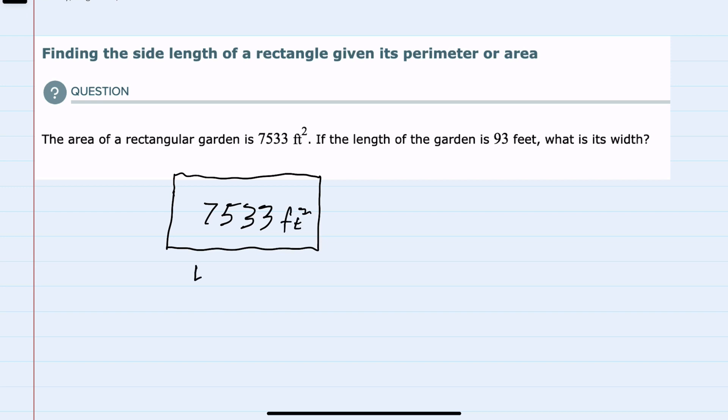We're also told that the length is 93 feet and we're asked to find the width. And for rectangles, we should recall that the area is equal to the length times the width.